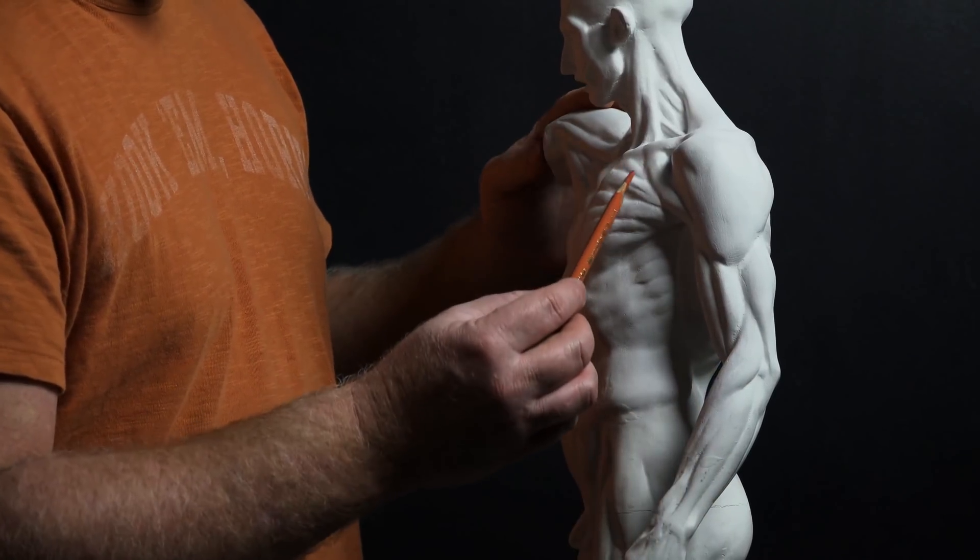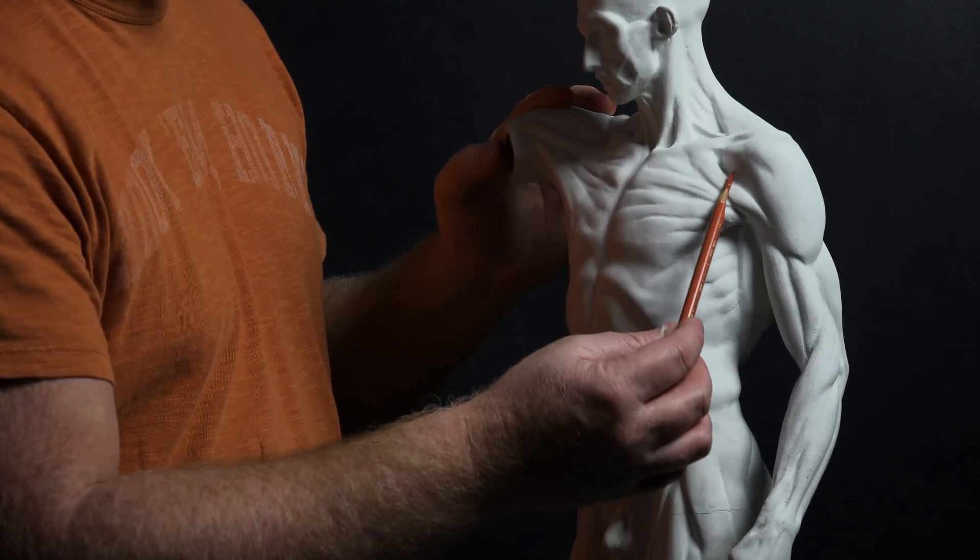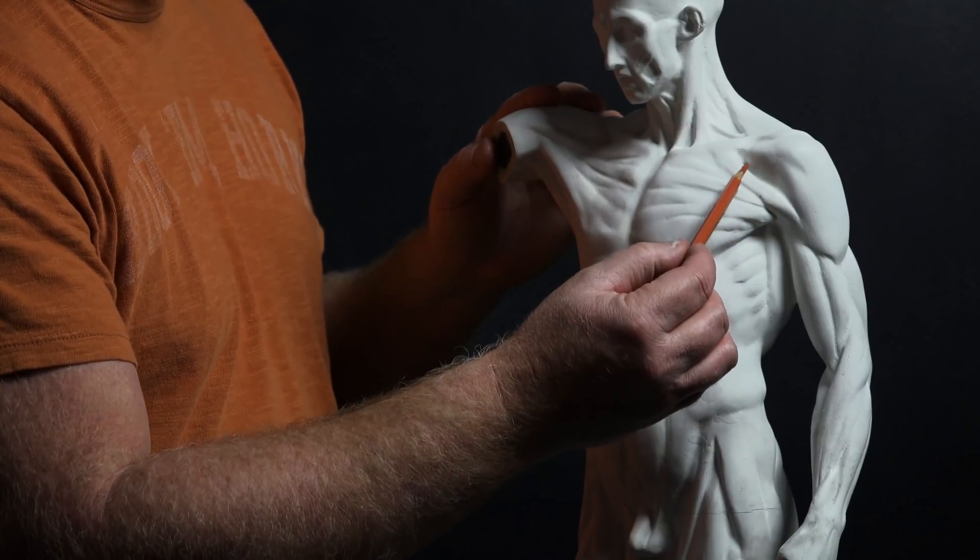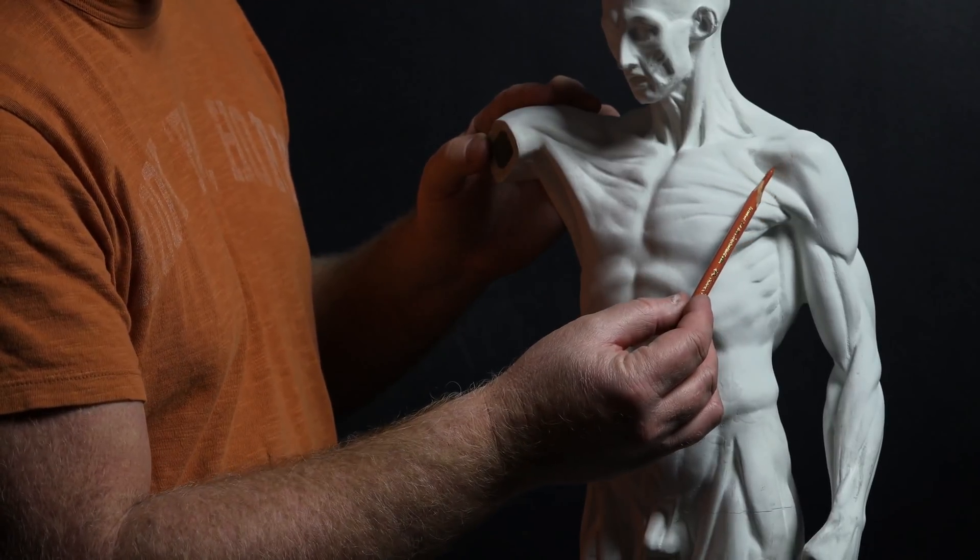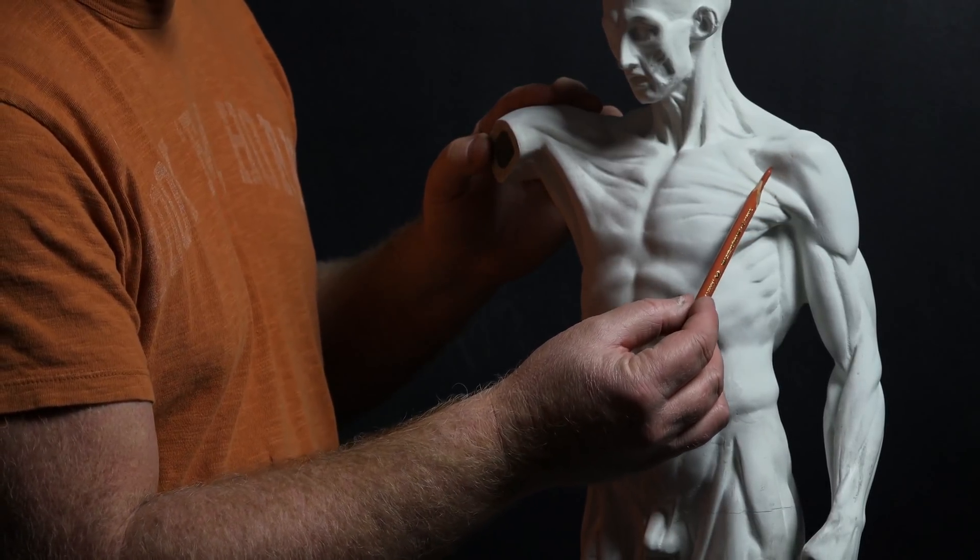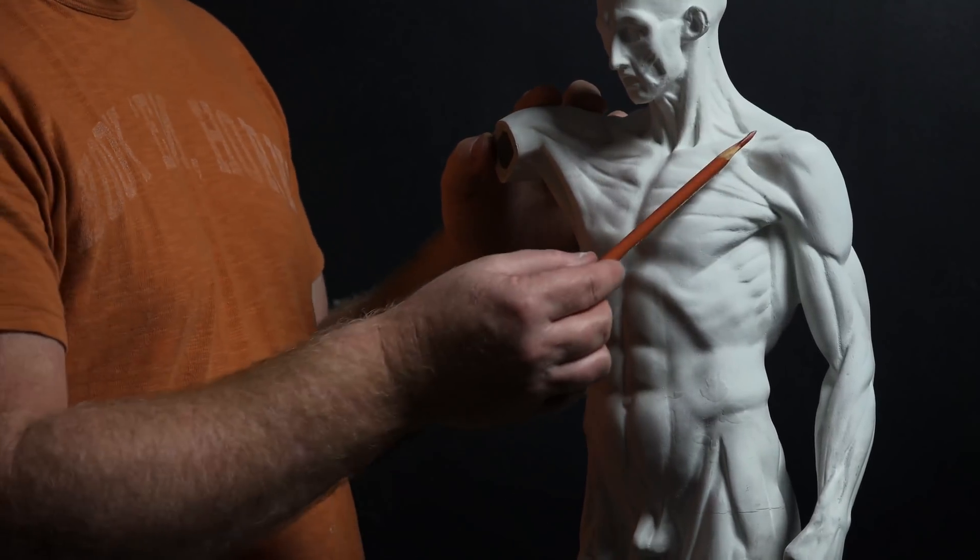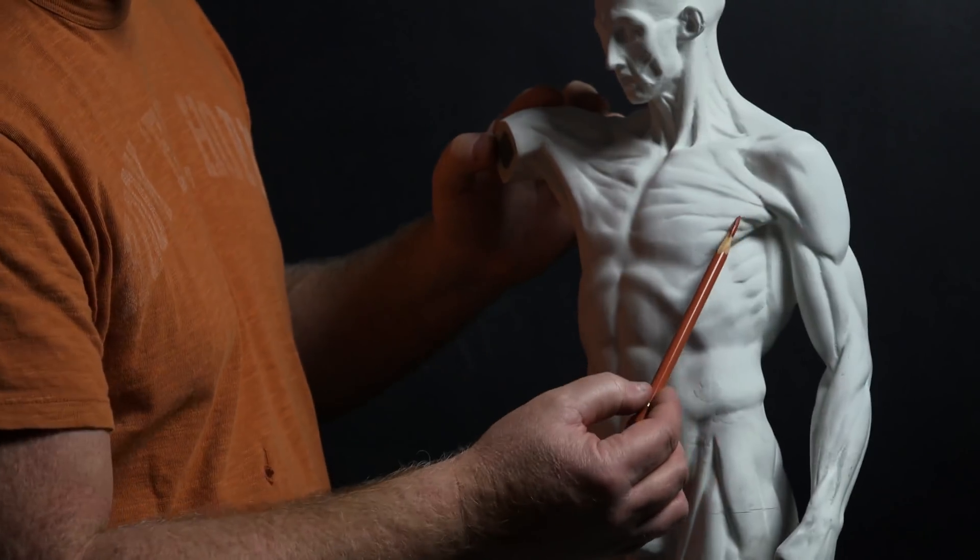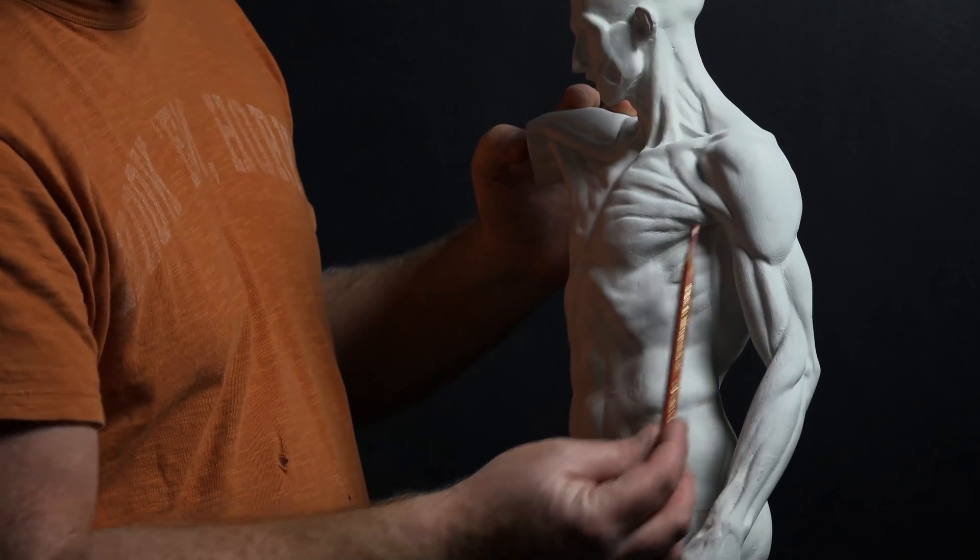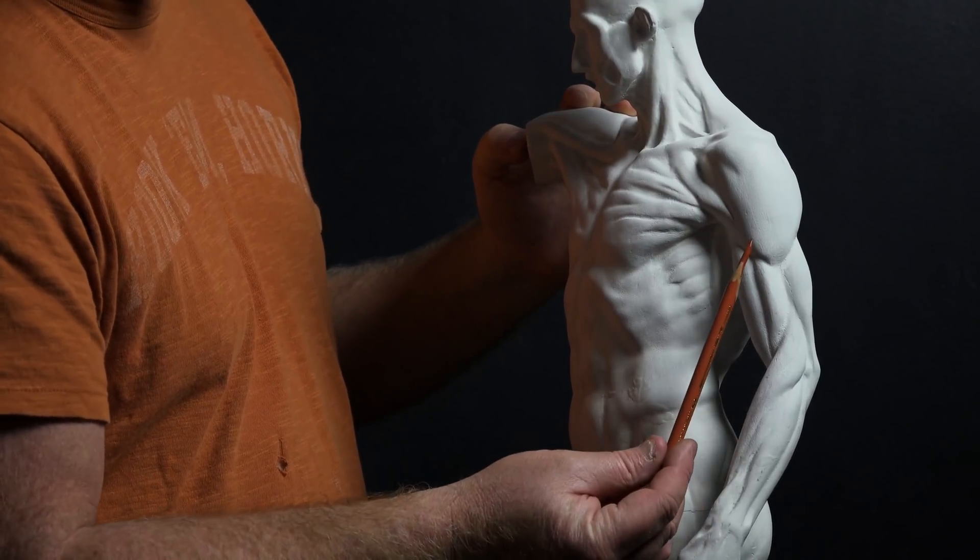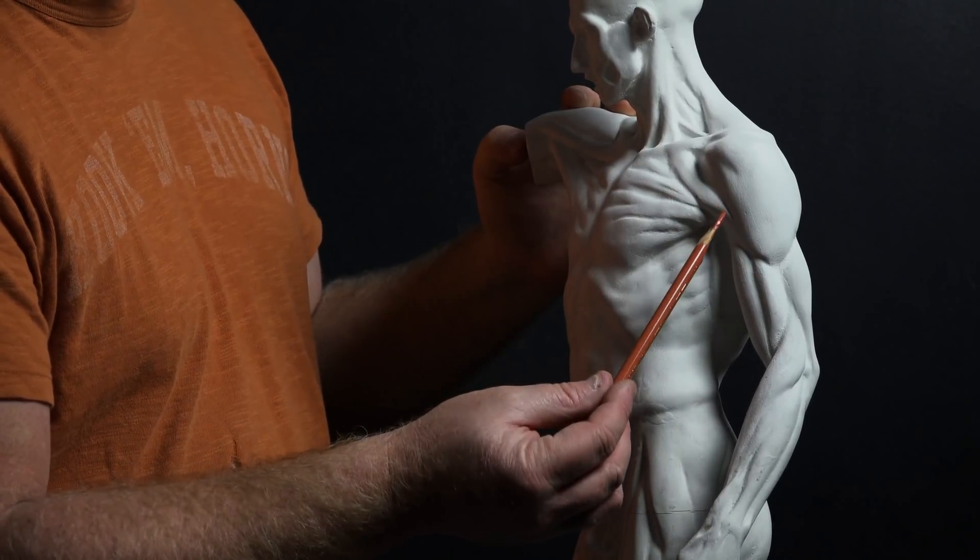Then it attaches to the deltoid tuberosity on the humerus, on the outside the lateral part of the humerus, that little bump that we've seen on the bone about halfway between the olecranon and the ball of the humerus. The middle layer is the pectorals. We've talked about the pectorals and the chest, but they can seem pretty seamless except for this nice little triangular depression in through here that many people have where the deltoid comes in.